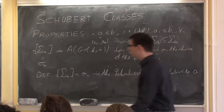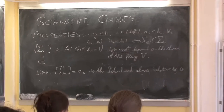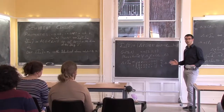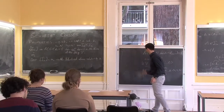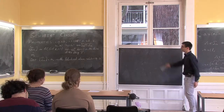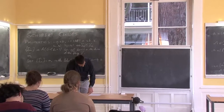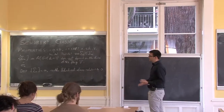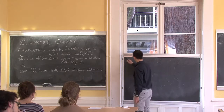Because the Schubert class is independent of the flag, we call it σ_a — the Schubert class relative to a — a well-defined class in the Chow ring. The intersection theory of these classes — computing all products — is a big subject called Schubert calculus. Hopefully in the next lecture Andras will explain some of this.